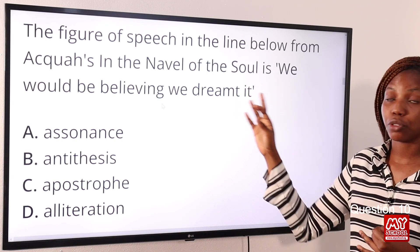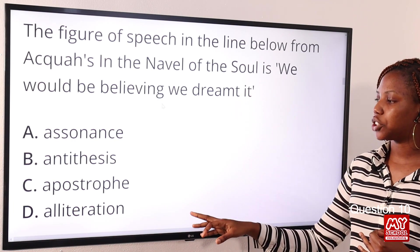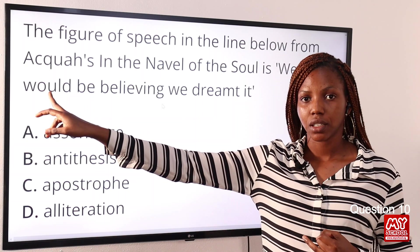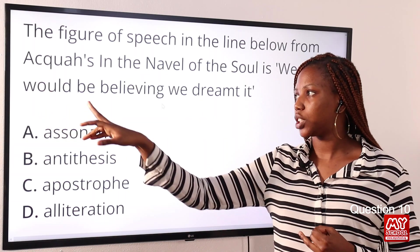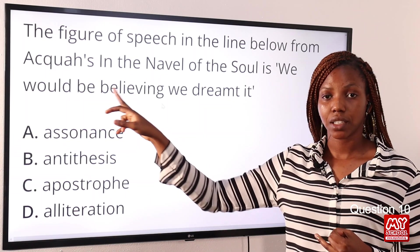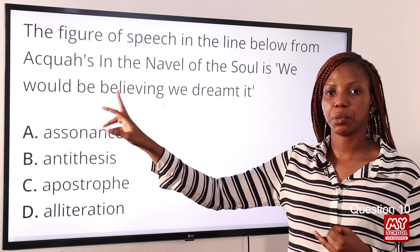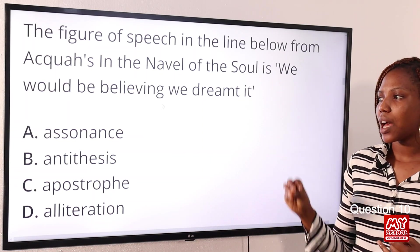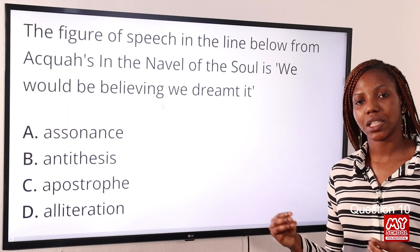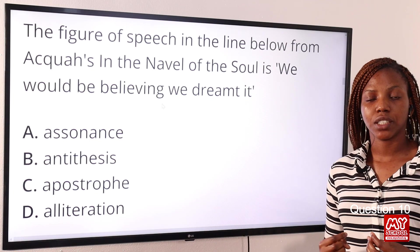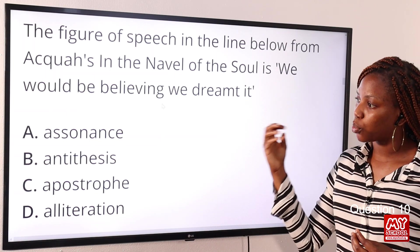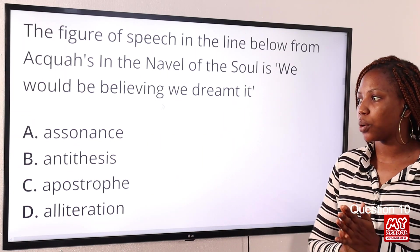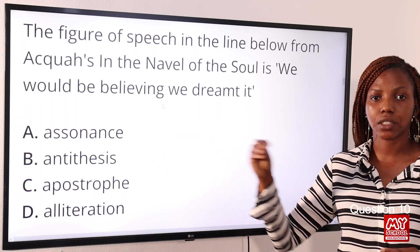For alliteration we see 'we' and 'would' together, and 'be' and 'believing' together — alliteration requires closeness of consonant sounds. Assonance is used much more prominently than alliteration in this line, which is why Option A: assonance is the final answer.